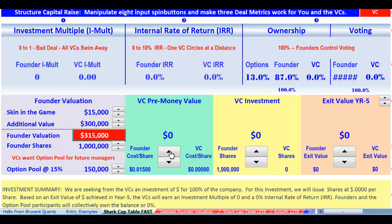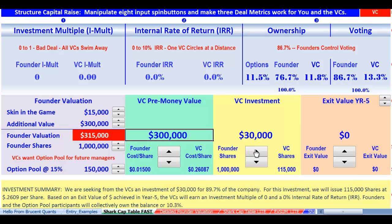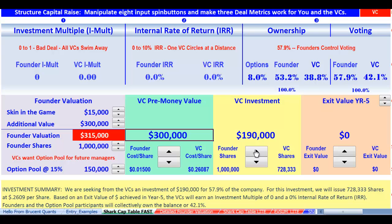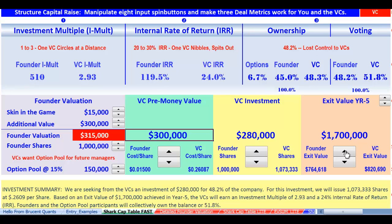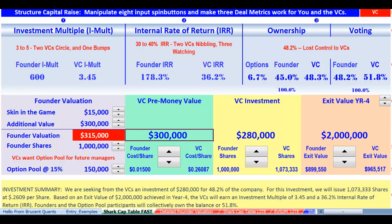We think the company's worth $315,000. The investors probably will see it as less, so dial in 300. Put a VC investment or an investment from whomever at about $280,000. We think you can sell this company at about $2 million in year four. Now let's go look at the numbers.